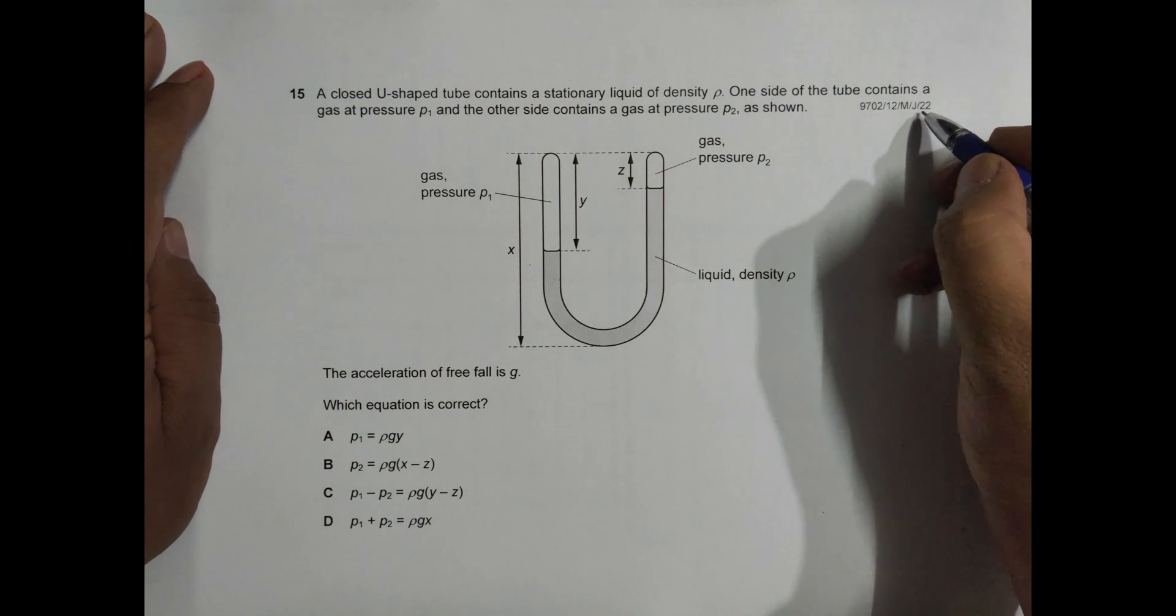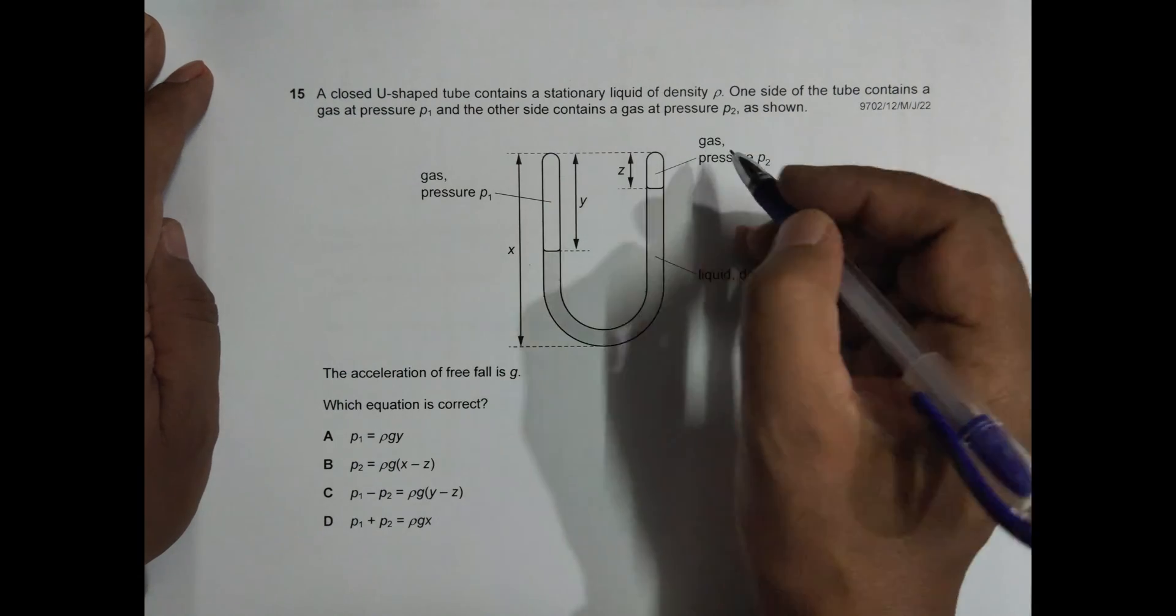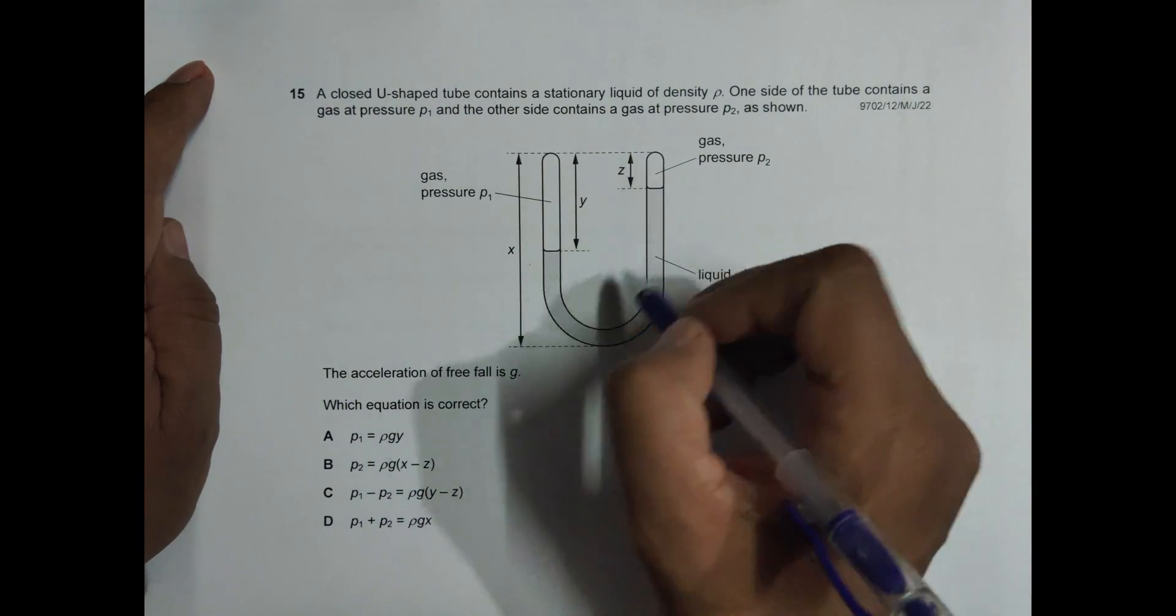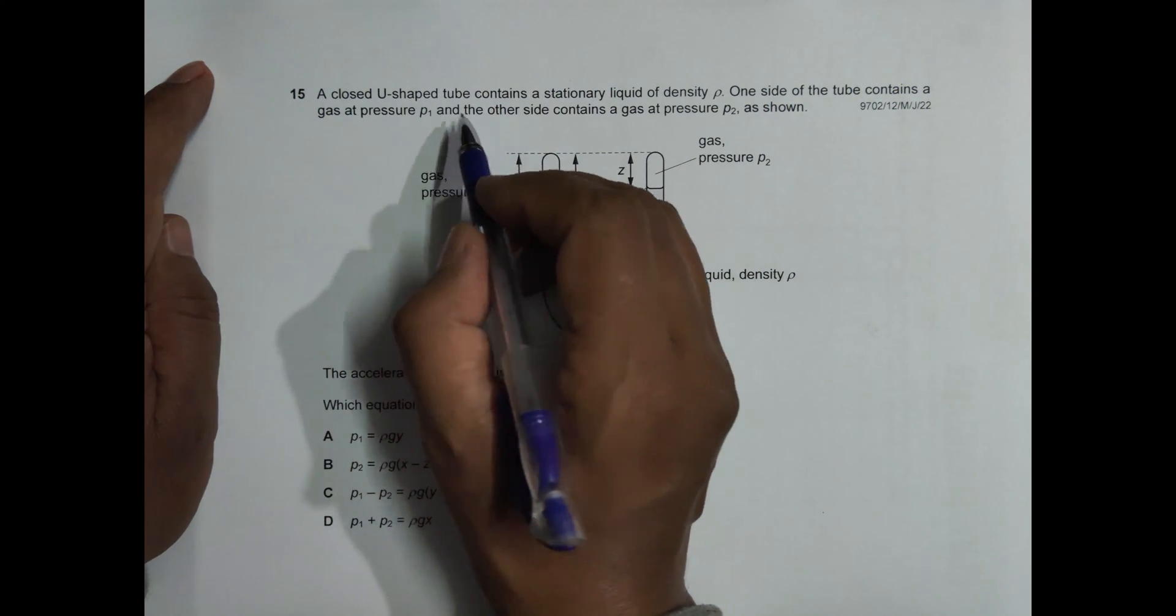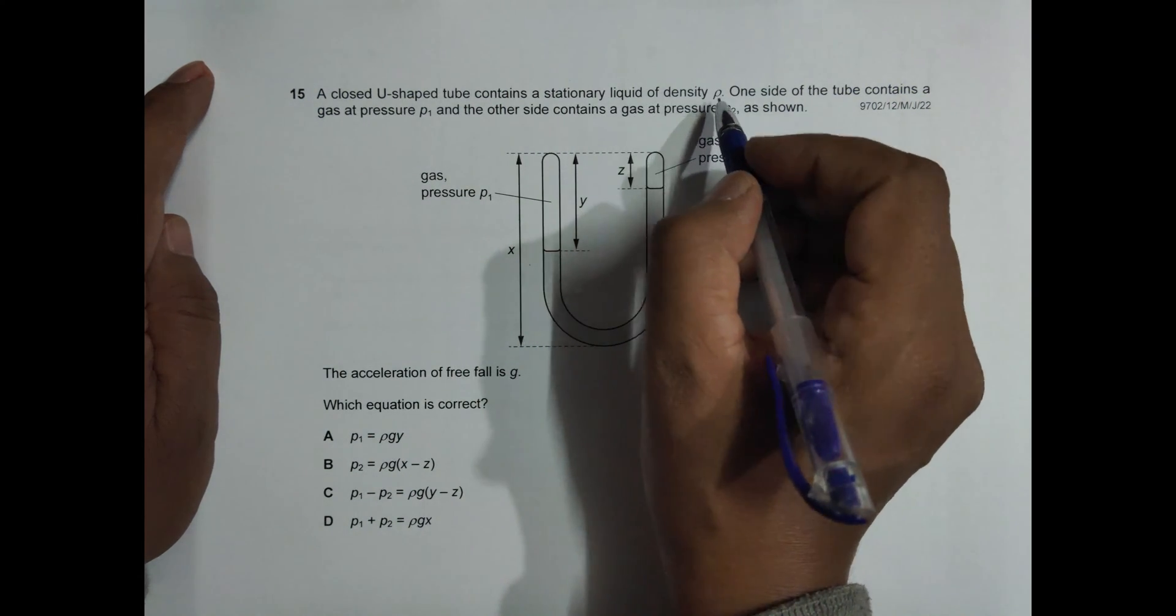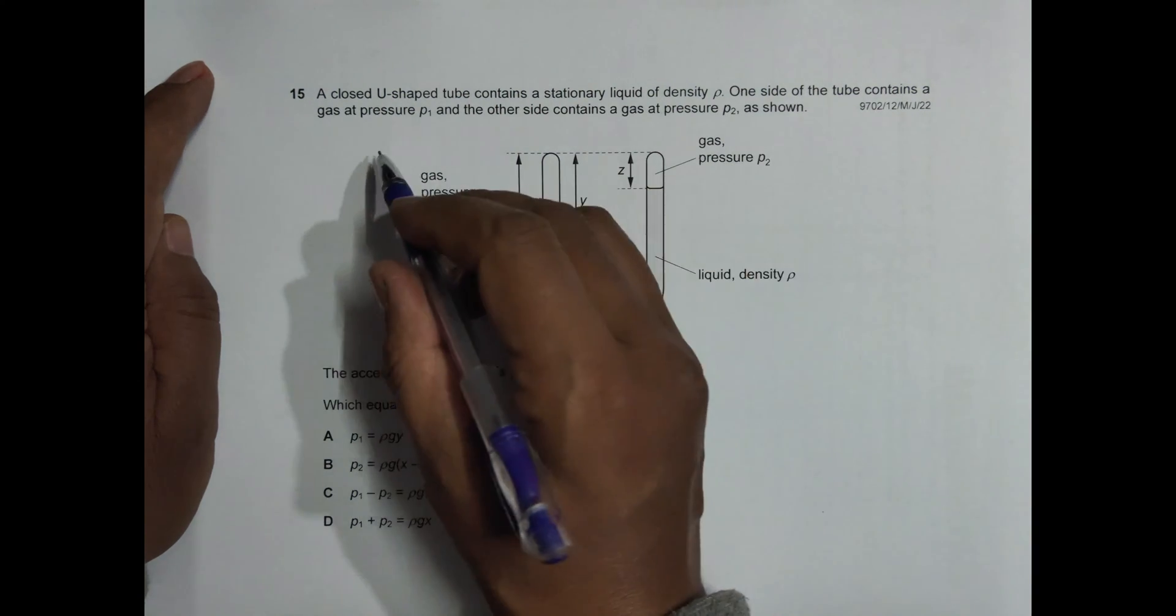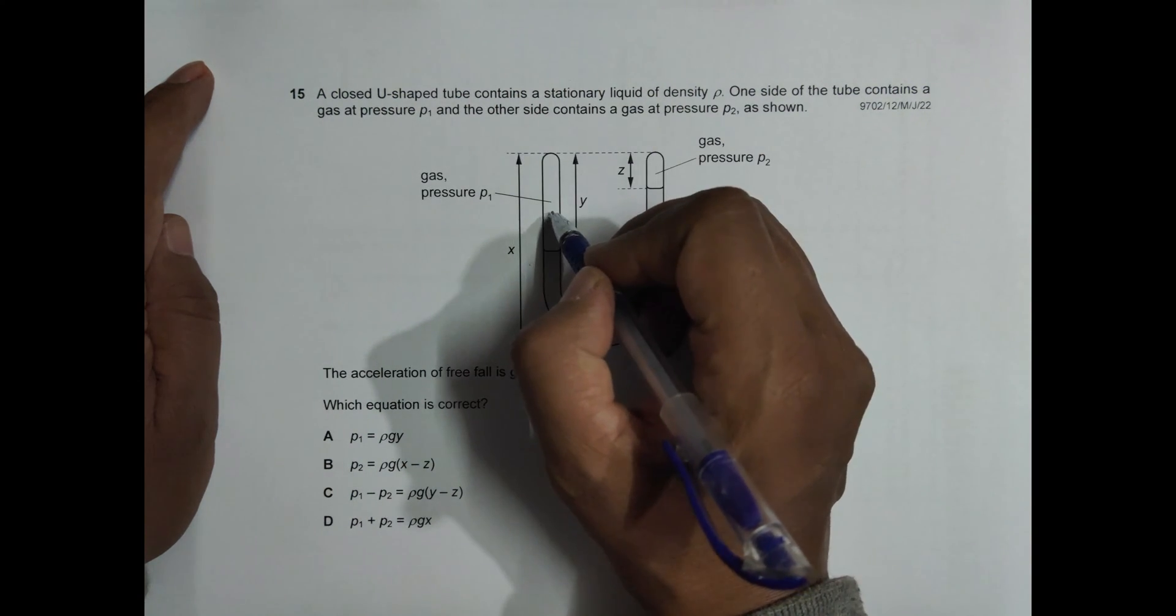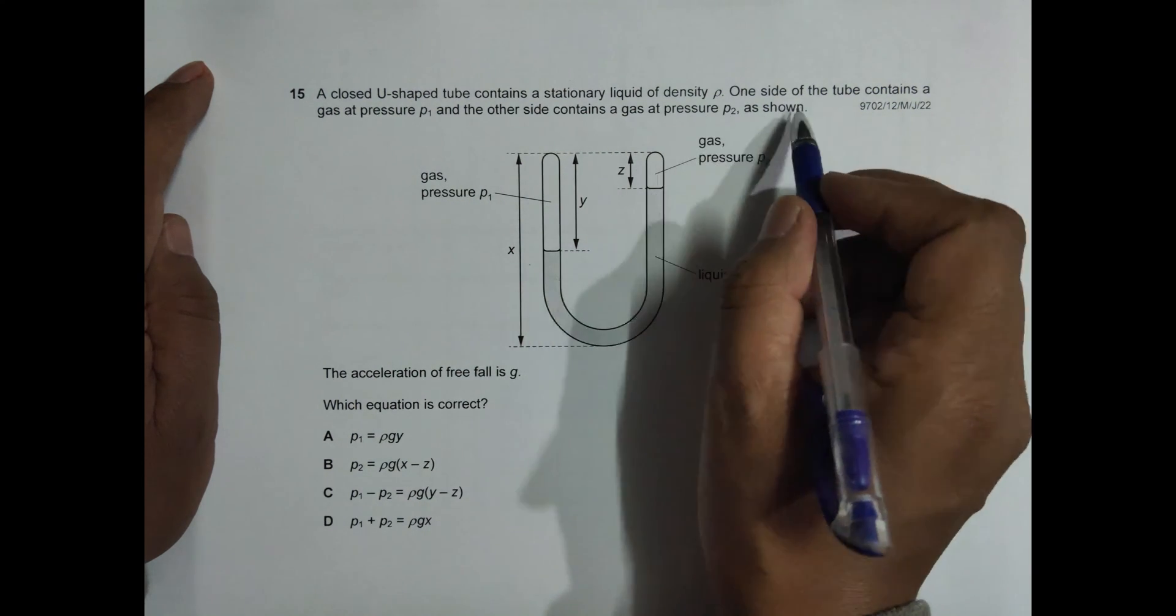Hello folks, this is your 2022 major exam paper 1-2, question number 15. This is about pressure. You can see the parameters and arrangement here. A closed U-shaped tube contains a stationary liquid of density ρ. One side of the tube contains a gas at pressure P1, and the other side contains a gas at pressure P2, as shown.